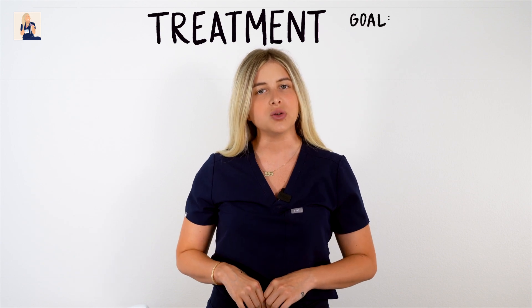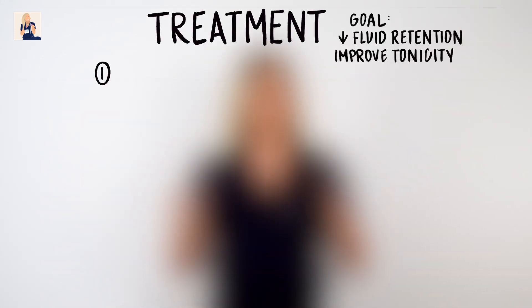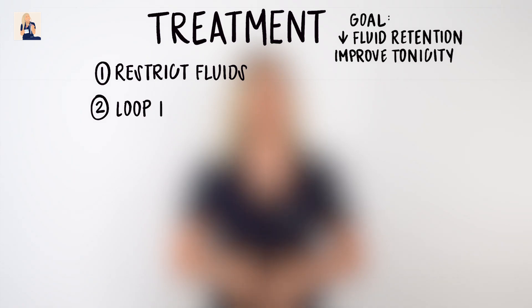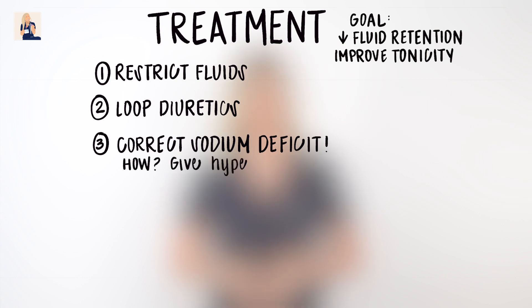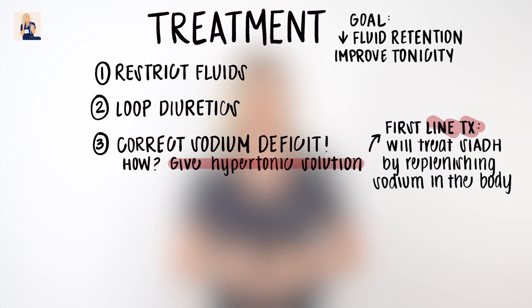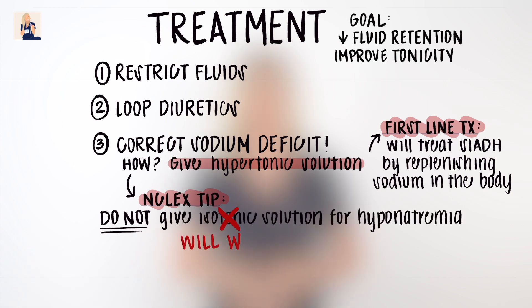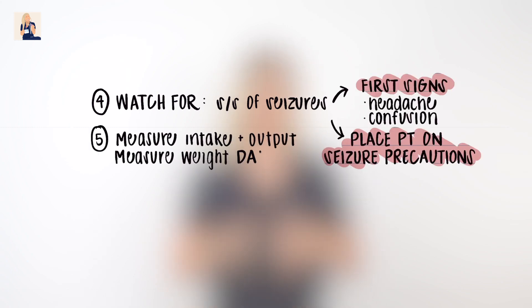So you've been diagnosed with SIADH — how do you treat it? The goal of treatment is to decrease fluid retention and improve tonicity homeostasis. It's easy to think that giving normal saline to a patient with hyponatremia from SIADH will raise the serum sodium level, but in SIADH, giving normal saline will actually lower the serum sodium even more. So our first-line treatment for severe hyponatremia is hypertonic solutions. This treats SIADH by replenishing sodium without adding extra fluid. As a nurse, we also watch for seizures, place the patient on seizure precautions, measure intake and output, and measure daily weight.